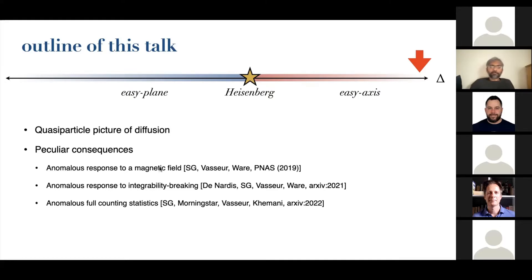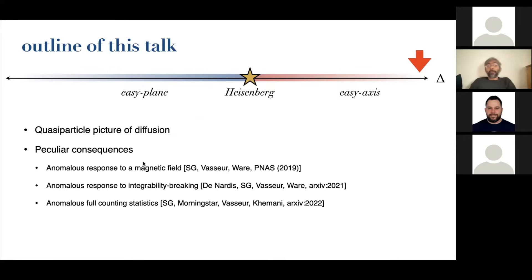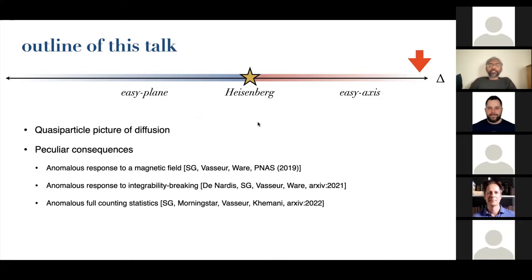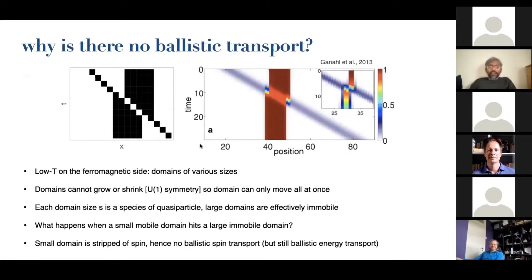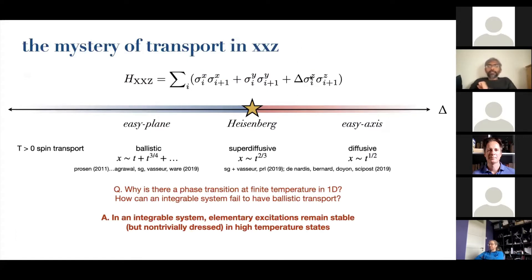In the rest of this talk, I want to give an overview of why there's diffusion, and then talk about three ways in which this diffusion is very strange compared to what you'd normally expect in a diffusive many-body system, like a chaotic spin chain or an exclusion process. Let me give a quick argument as to why there's no ballistic transport, focusing on what happens at infinite anisotropy.